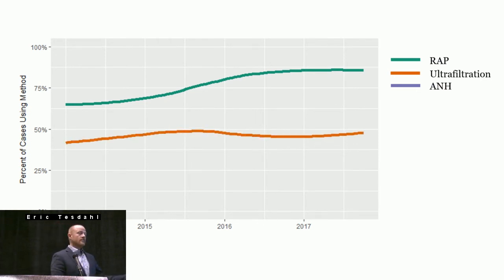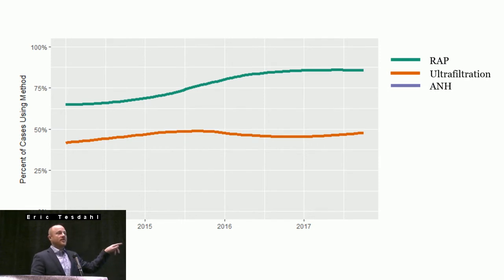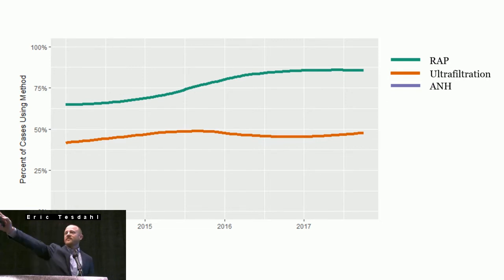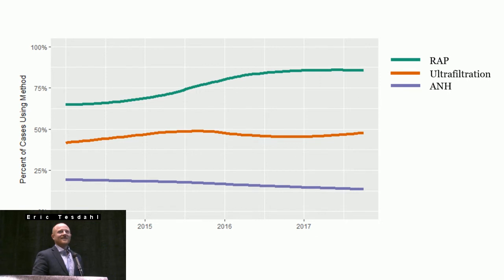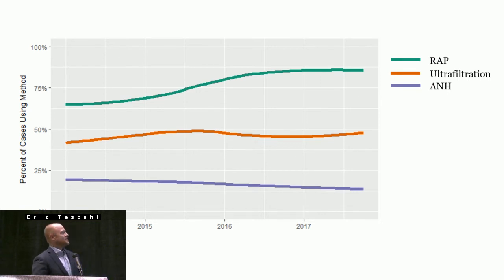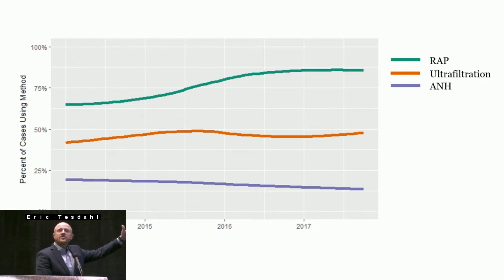Ultrafiltration shows some growth, a little flatter — we'll have more to say about that in the next slides, with some very interesting patterns. How about ANH? Going down. So we can see some of these things going in opposite directions: wrap going up, ANH going down gently, ultrafiltration up a little.